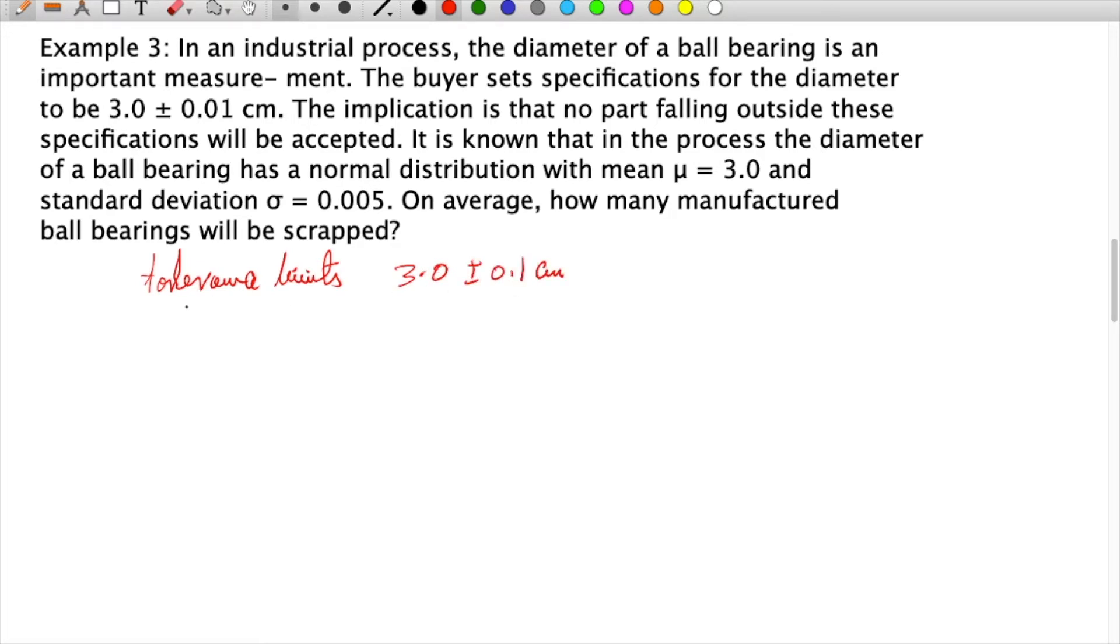The implication is that no part falling outside these specifications will be accepted. It is known that in the process, the diameter of the ball bearing has a normal distribution with mean 3.0 and standard deviation 0.005. On average, how many manufactured ball bearings will be scrapped?